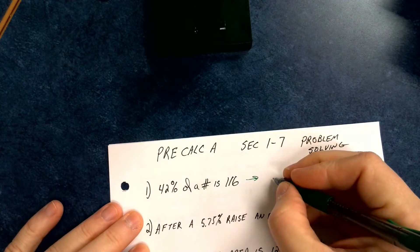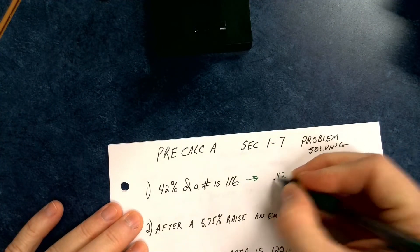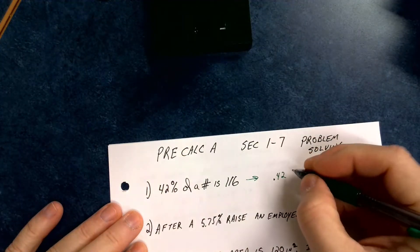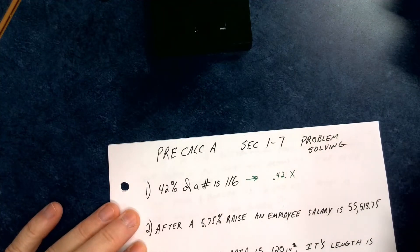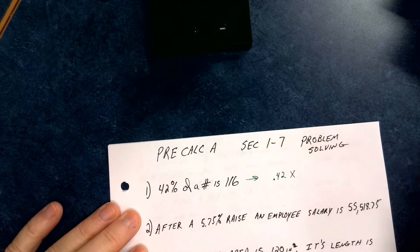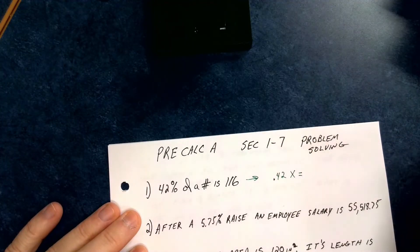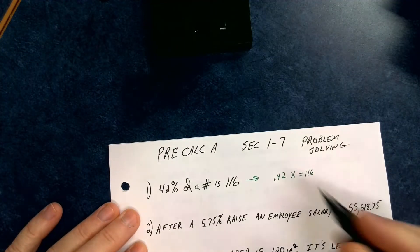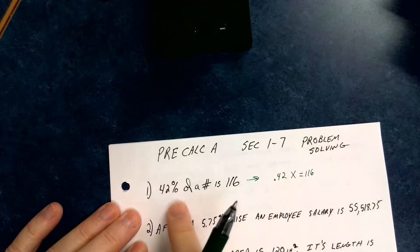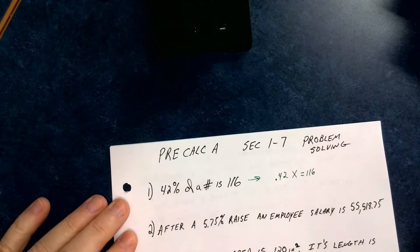So, 42% of a number is 116. We know 42% becomes 0.42. 'Of' in mathematics refers to multiplication. 'Of a number' — we don't know the number, so we use x or a variable. You can choose whichever variable you want. Maybe you want n because it said 'of a number.' 'Is' refers to equals, and 116. So I can convert this written statement into a mathematical equation.